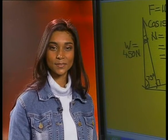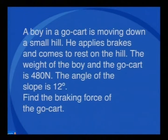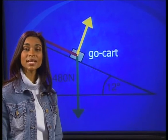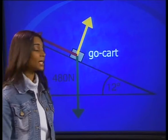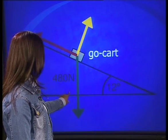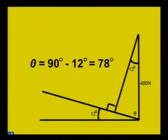Now it's time for today's task. A boy in a go-kart is moving down a small hill. He applies brakes and comes to rest on the hill. The weight of the boy and the go-kart is 480 N and the angle of the slope is 12 degrees. Use trigonometry to find the braking force of the go-kart. To help you, here is a diagram of all the forces acting on the cart. The force that holds the cart in place is the braking force. The weight is 480 N acting downwards. The normal acts at 90 degrees to the surface and the angle between the normal force and the weight vector is 12 degrees, so the other angle theta will be 90 minus 12 degrees, which gives 78 degrees.